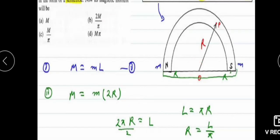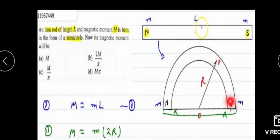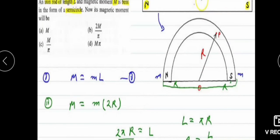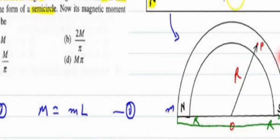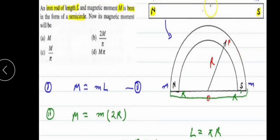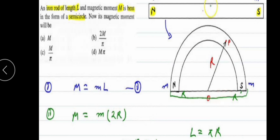We can also solve this using a short trick formula: M_new = M × sin(θ/2) / (θ/2). For a semicircle, θ = π. So we get M × sin(π/2) / (π/2) = M × 1 / (π/2) = 2M/π. This is the direct answer using the short trick.